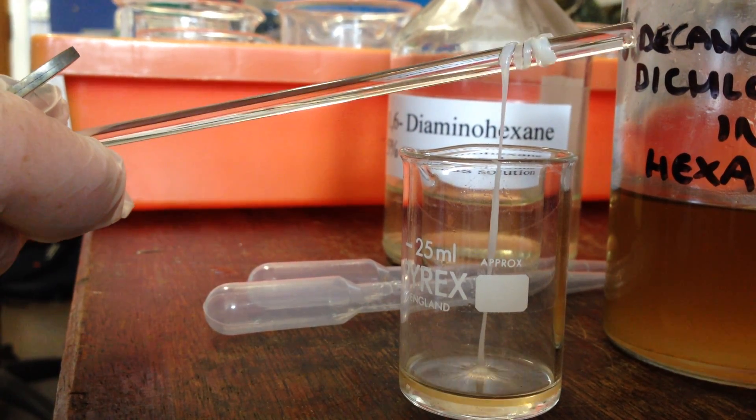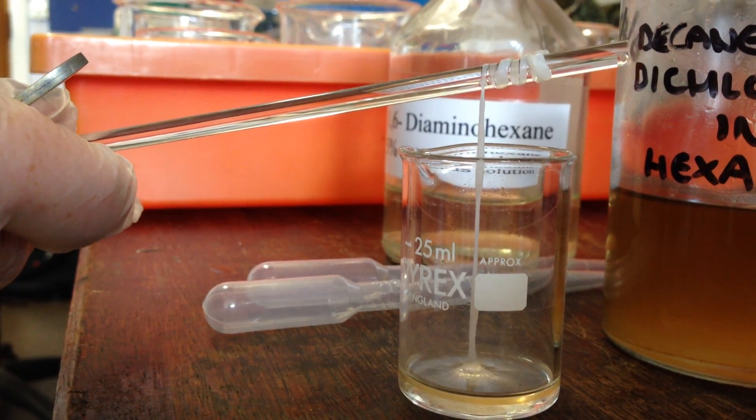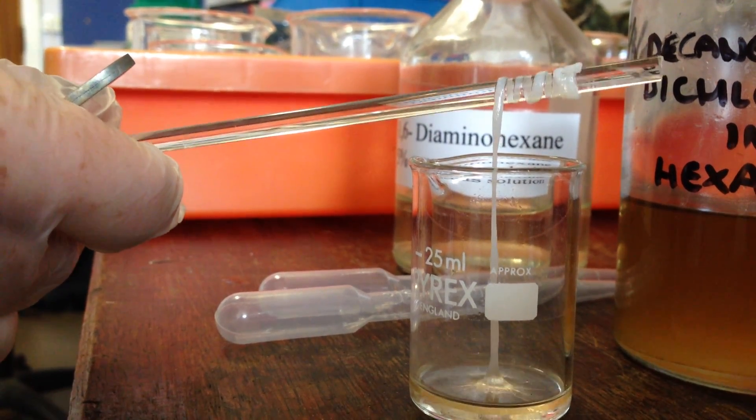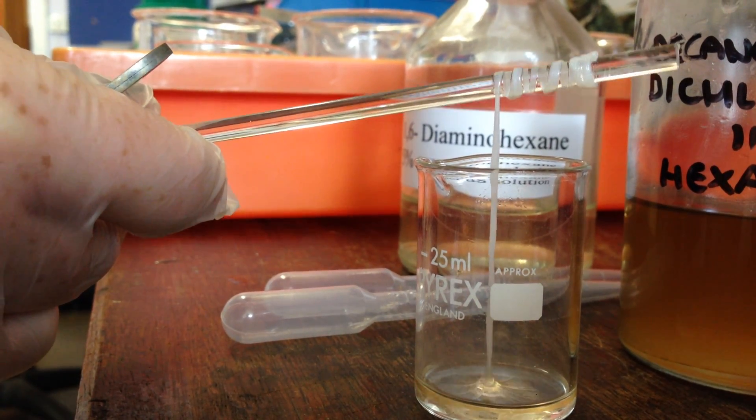Every time I take this out, more of the two monomers which are layered on top of each other come in contact. When they come in contact, they polymerize, and then I can pull them out as nylon.